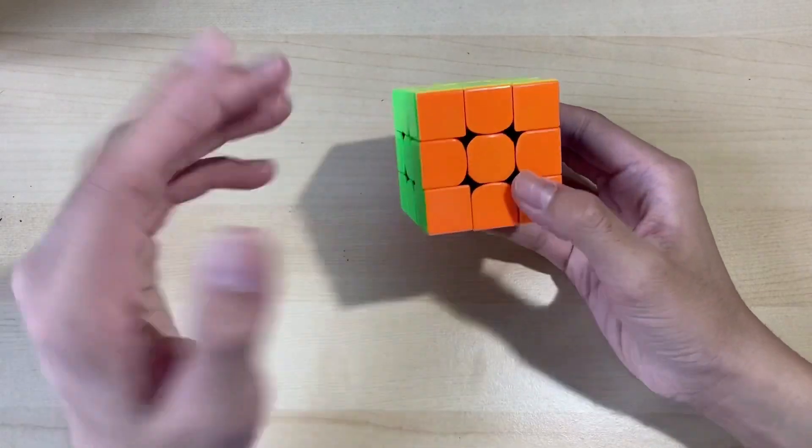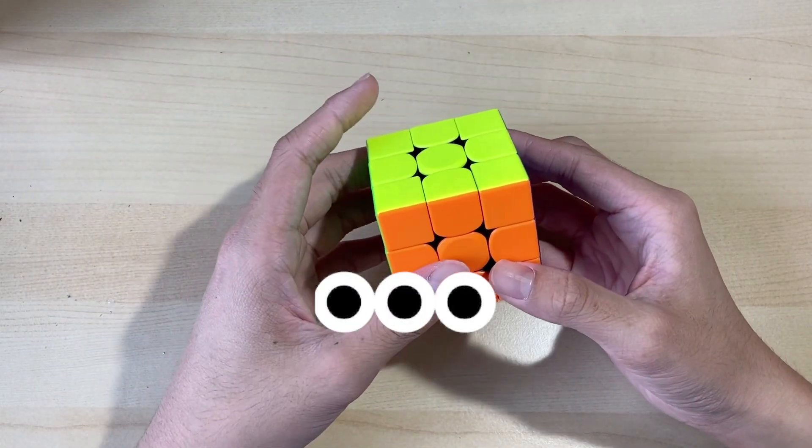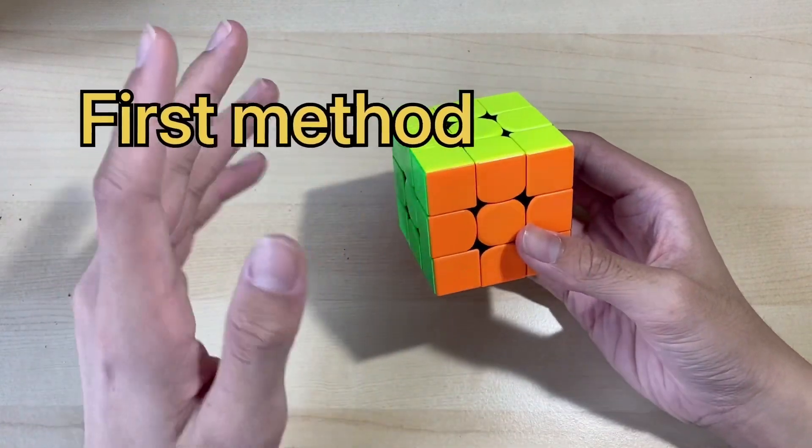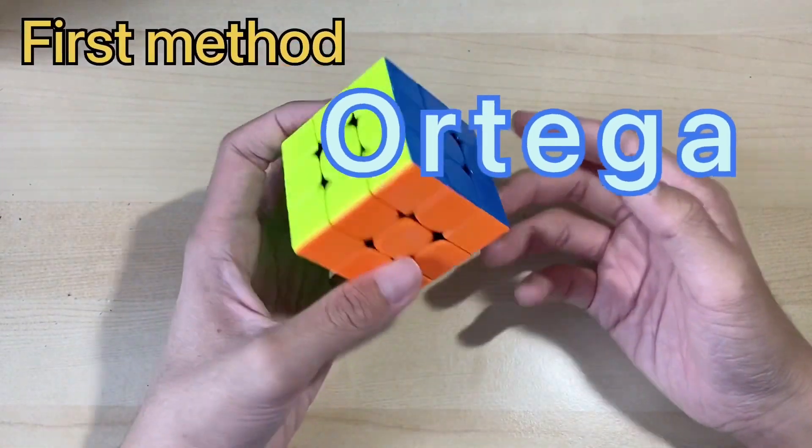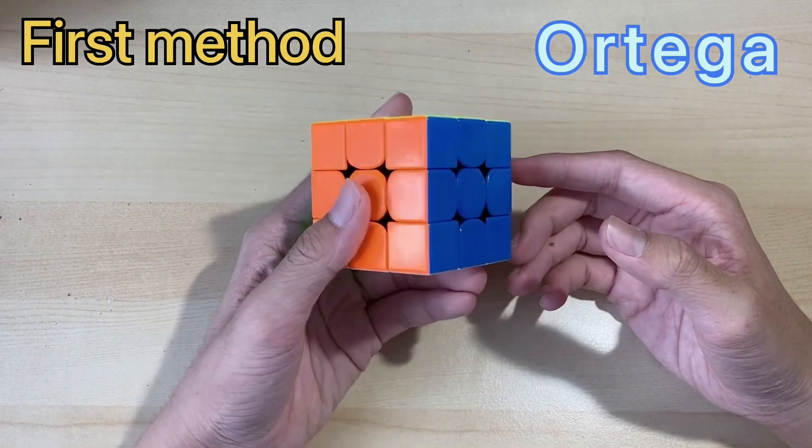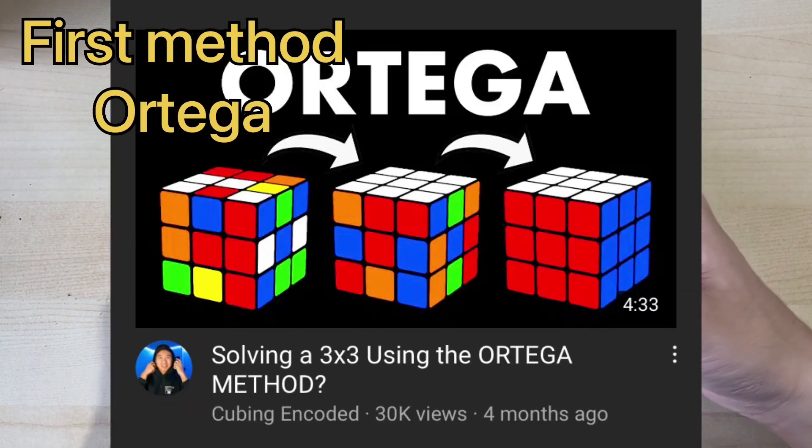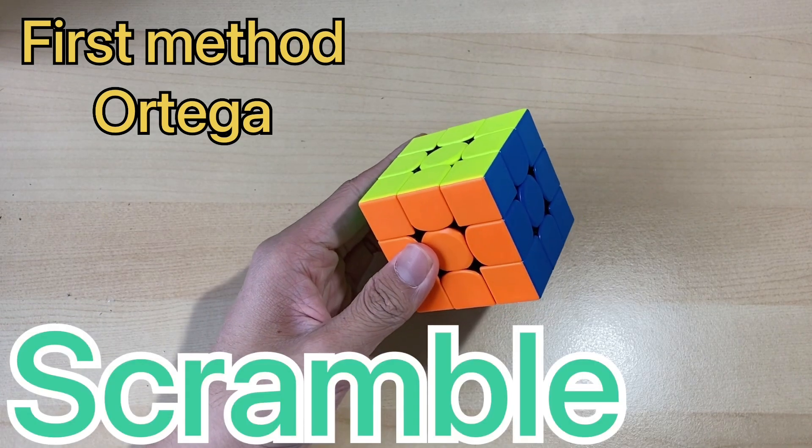Okay, the first method is the Ortega method, which is a method to solve 2x2, and this idea is from the cubing encoded. So let's scramble the cube up first.